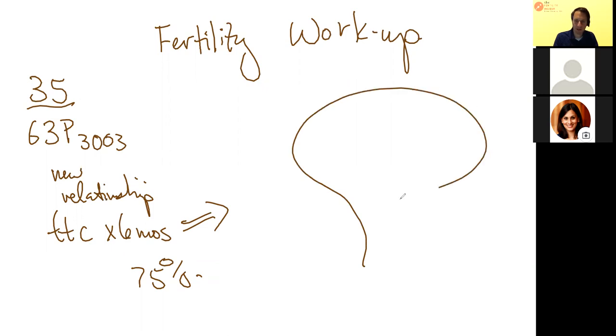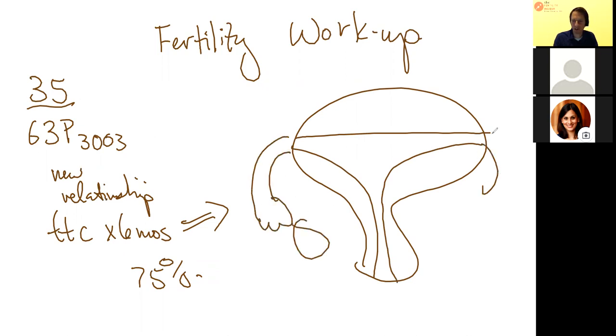The infertility workup is pretty straightforward. I always draw this to help organize the conversation so we know what parts we're checking and why. You have brain, uterus, tubes, ovaries, and sperm.